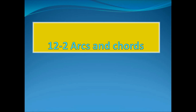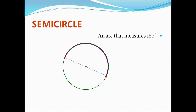Now we are going to start lesson 2 in chapter 12, which talks about arcs and chords. Look at this circle. Can you see the purple arc? This arc is called a semicircle — it represents half the circle.